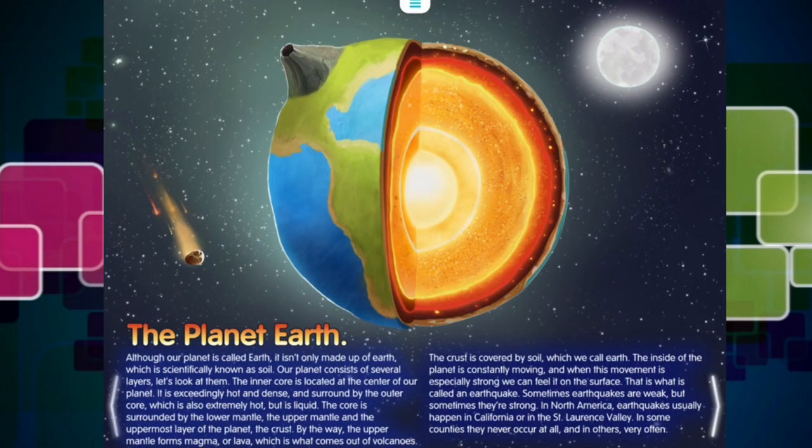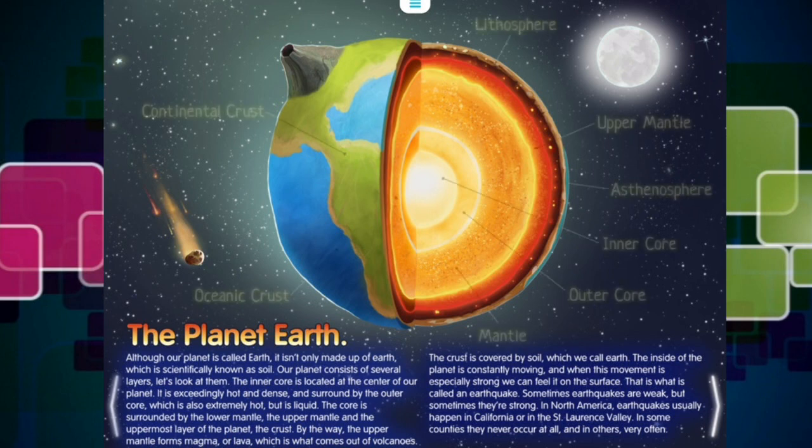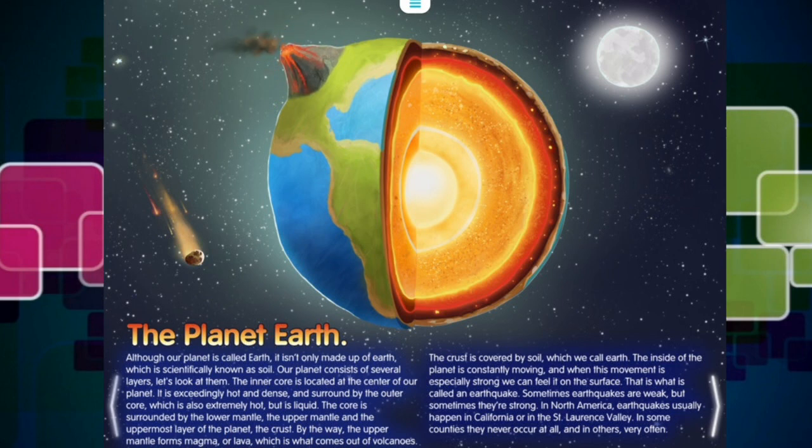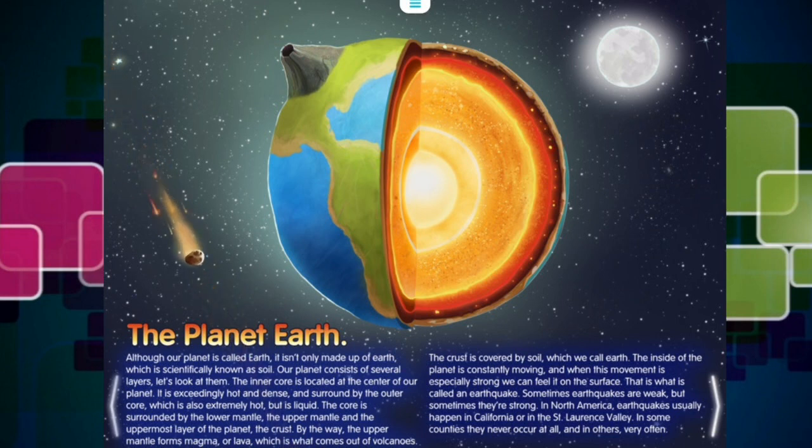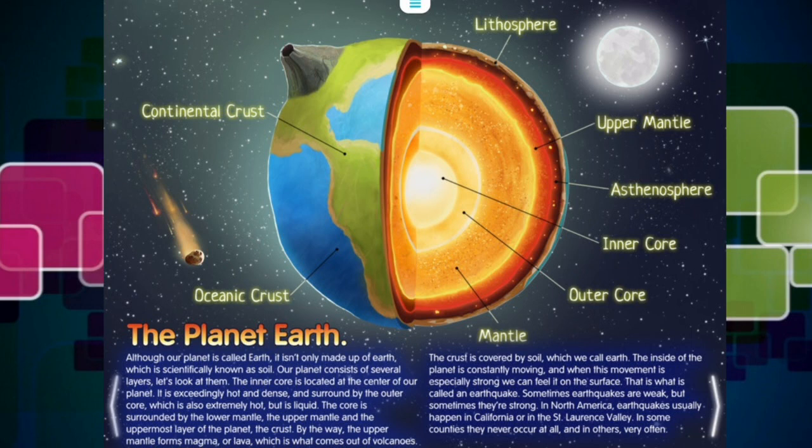Although our planet is called Earth, it isn't only made up of Earth, which is scientifically known as soil. Our planet consists of several layers. Let's look at them. The inner core is located at the center of our planet. It is exceedingly hot and dense, and surrounded by the outer core, which is also extremely hot, but is liquid. The core is surrounded by the lower mantle, the upper mantle, and the uppermost layer of the planet, the crust. By the way, the upper mantle forms magma, or lava, which is what comes out of volcanoes. The crust is covered by soil, which we call Earth.